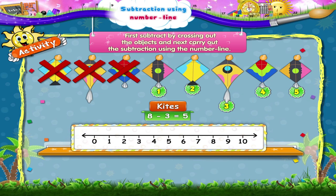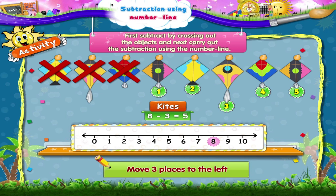Now using the number line, start at eight. Move three places to the left. One, two, three.